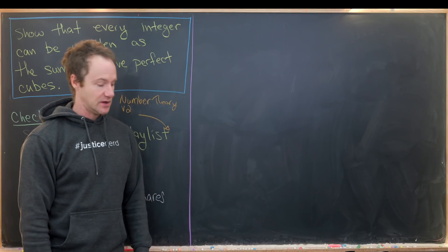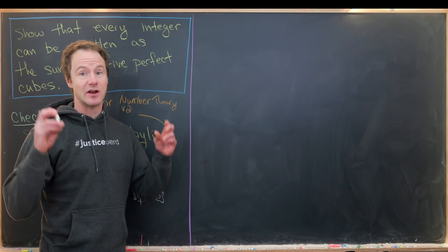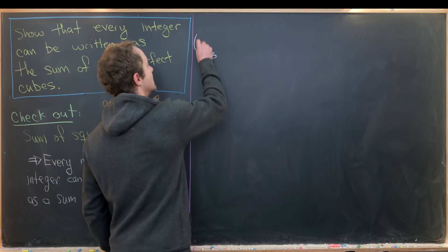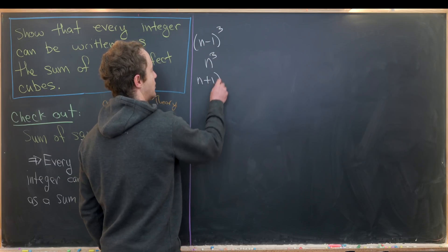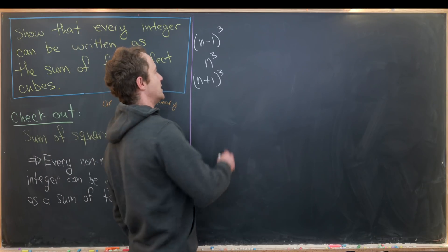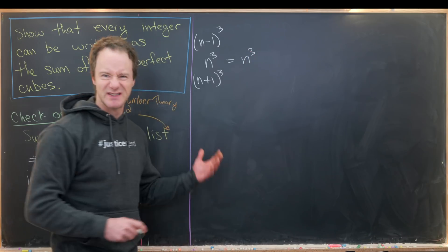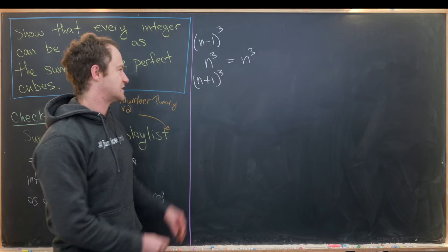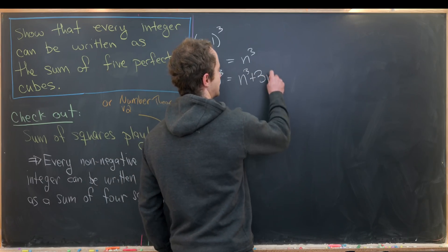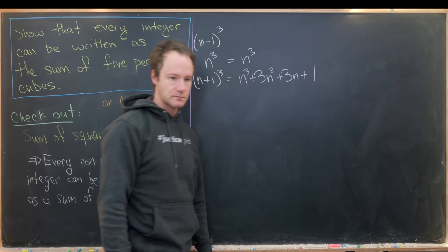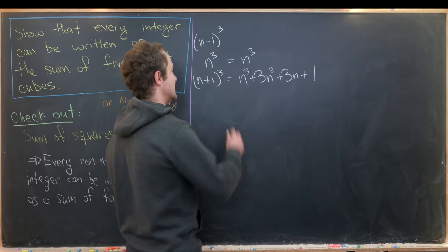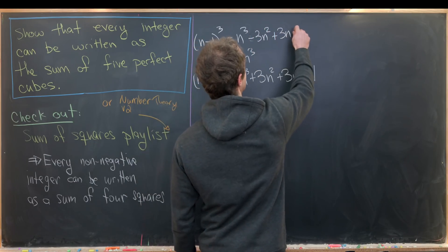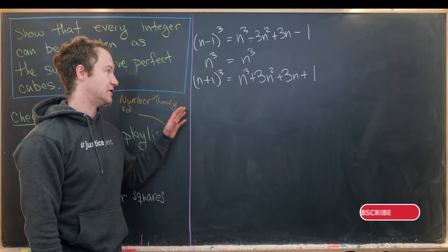The idea for how to get started will be to look at some perfect cubes that are near each other and see what we could do to add them together to get things to cancel. I want to look at n³ versus (n-1)³ versus (n+1)³. Using binomial expansion for (n+1)³, we get n³ + 3n² + 3n + 1. Similarly, for (n-1)³, we get n³ - 3n² + 3n - 1.